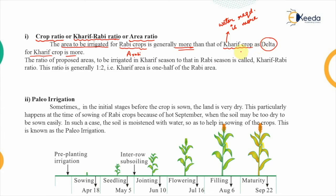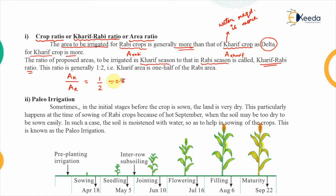The area irrigated under rabi crops with the same water supply is called A-rabi, and for kharif it is A-kharif. The ratio of these proposed irrigated areas in the order of kharif to rabi is known as the kharif-to-rabi ratio. This ratio comes out to be in the range of 1:2, or equivalently 0.5, meaning the kharif area is generally one half of the area that can be irrigated under rabi crops.